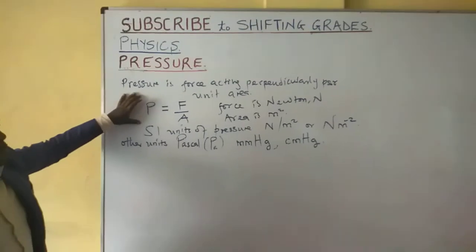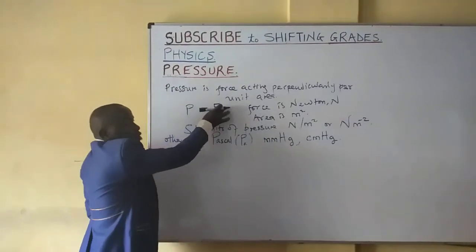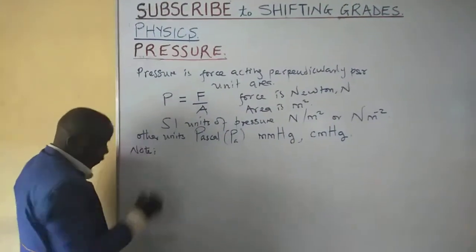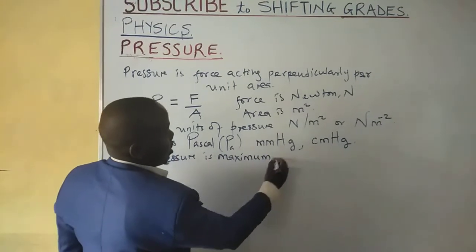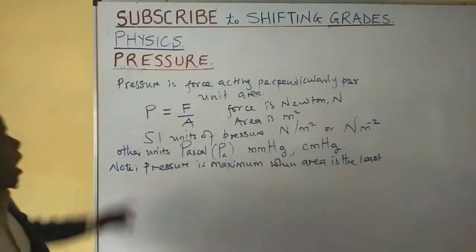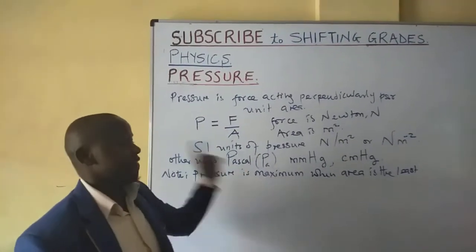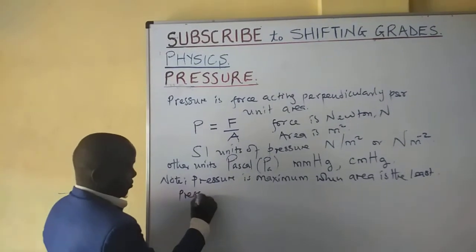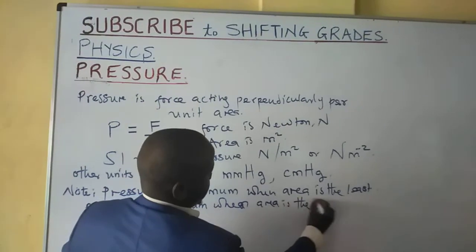From the mathematical expression of pressure, we can observe that pressure is directly proportional to force but inversely proportional to area. Therefore, pressure is maximum when area is least, and pressure is minimum when area is largest or greatest.